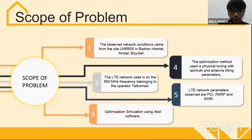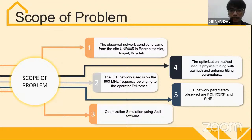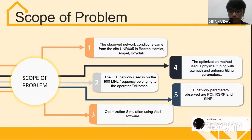The scope of the problem: first, the observed network condition comes from site UNL605 in Quadrant Hamlet, Ampel, Boyolali. Second, the LTE network used is on the 900 MHz frequency belonging to the telecom cell operator. Third, optimization simulation using ATOLL software. Fourth, the optimization method used is physical tuning with azimuth and antenna tilting parameters. Fifth, the LTE network parameters evaluated are RSRP, RSRQ, and SINR.